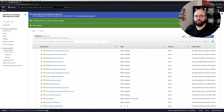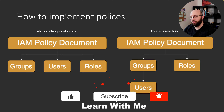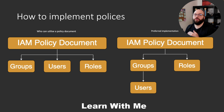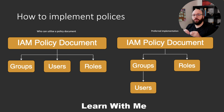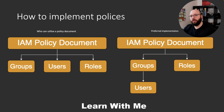Now that we've covered what a policy document is and how it works, it's important to understand how we can implement it. An IAM policy document can be implemented on groups, users, or roles. The best approach: instead of giving granular permissions to every single user individually — which becomes very hard to manage when you have 10 or 15 users across departments — it's really advisable to assign users to a single group and assign policies to that group.